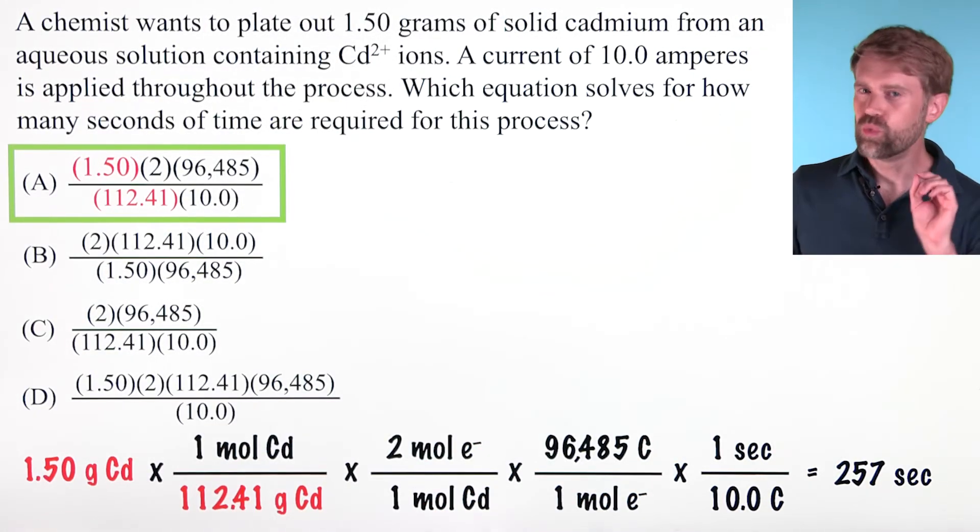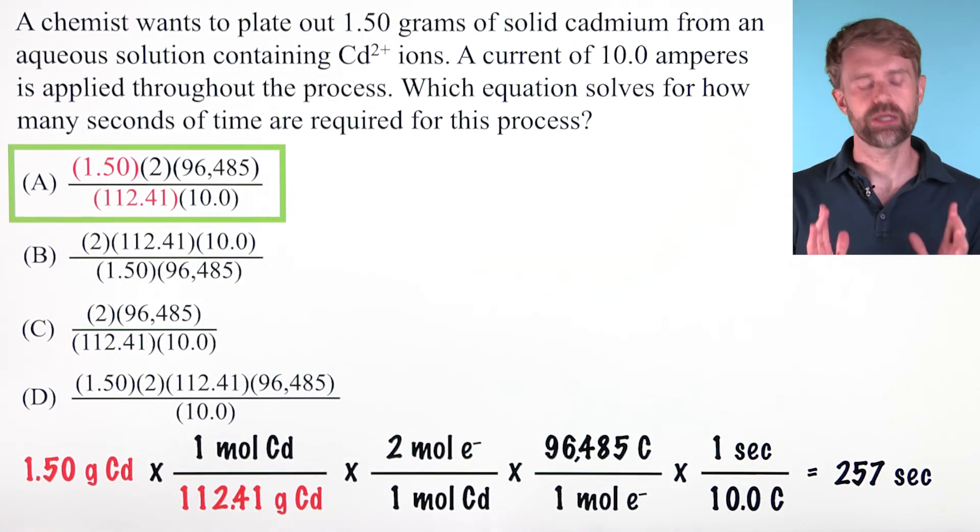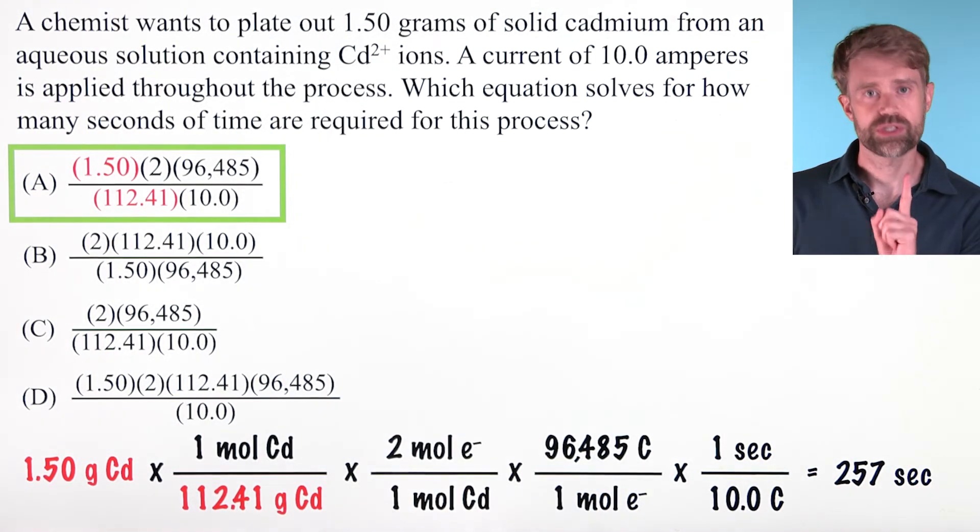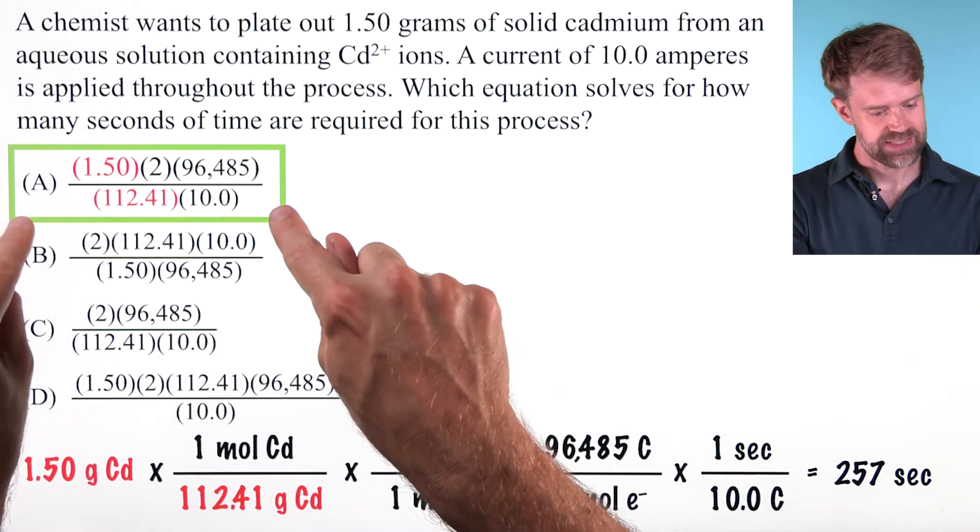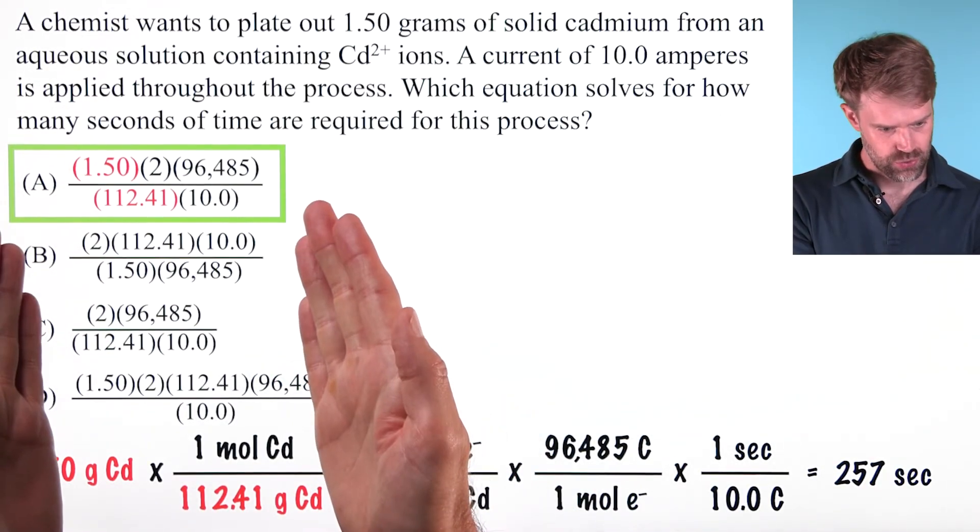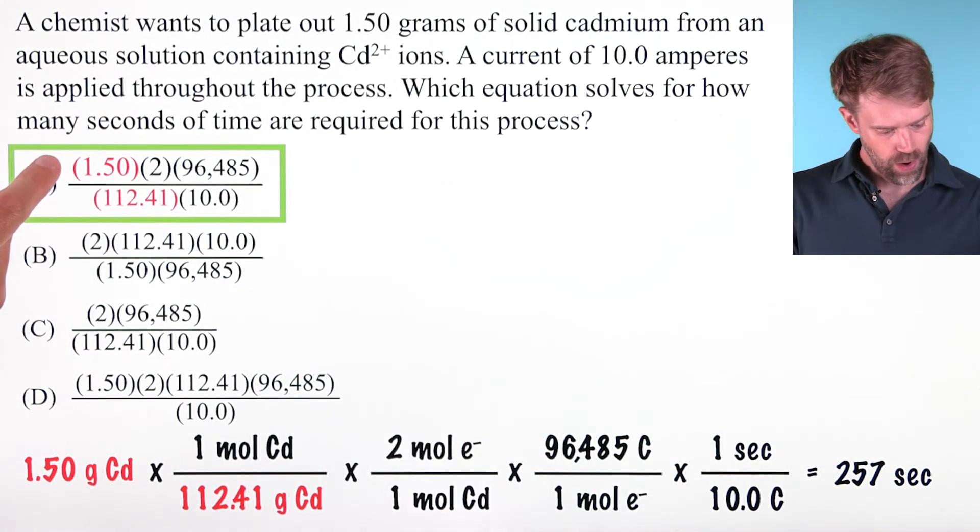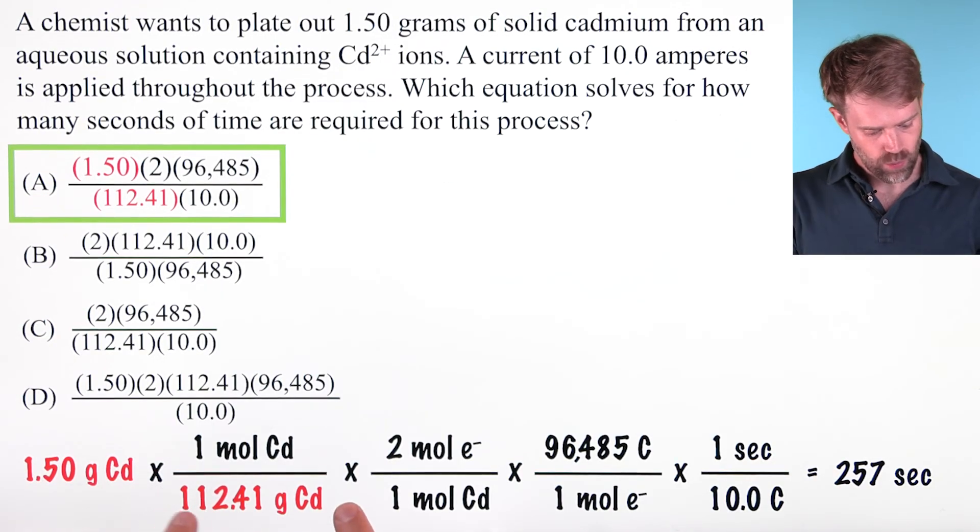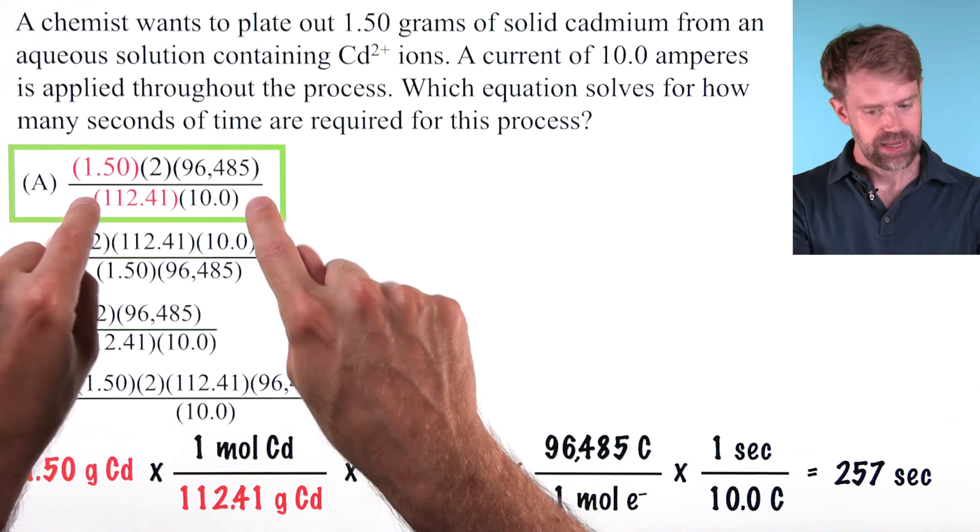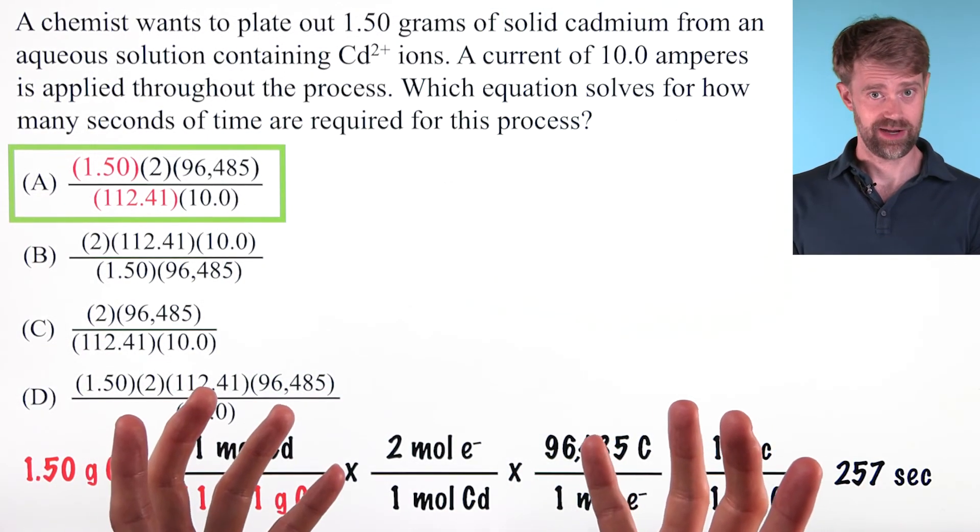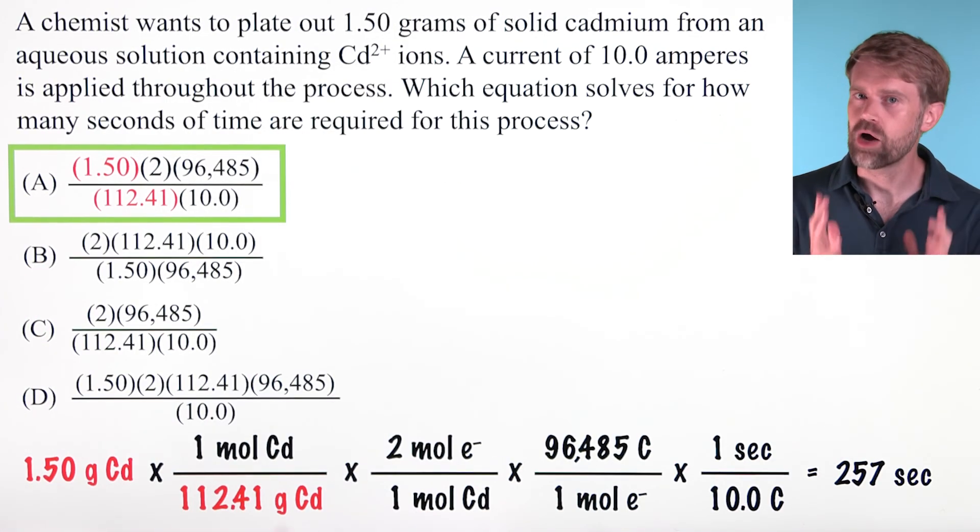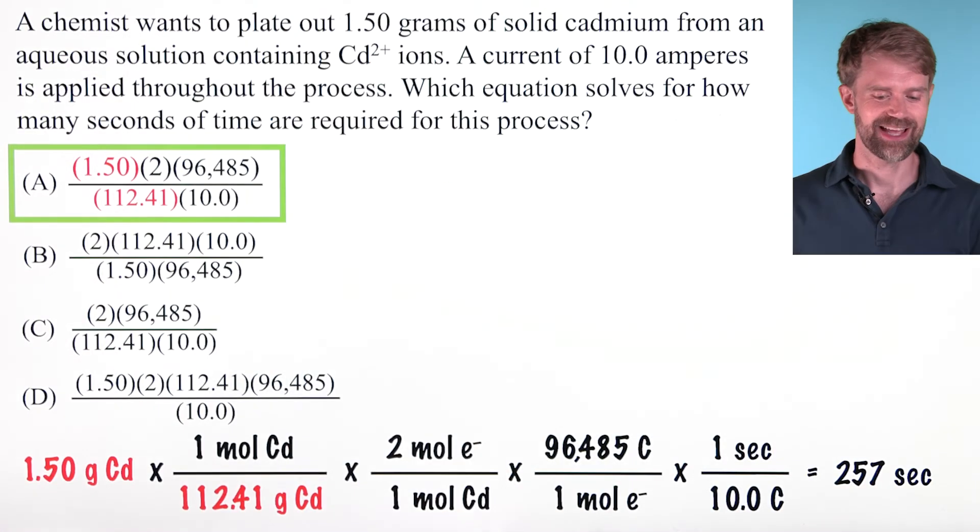If you really know what you're doing, you probably could have figured out that A was the correct answer after only the first step. That's because A is the only answer choice that has 1.50 in the numerator and 112.41 in the denominator. That would be a gutsy move to choose choice A after just the first step, but if you really know what you're doing it can save time.